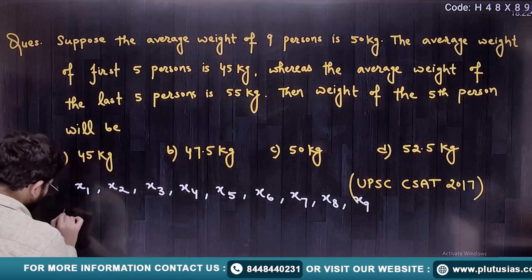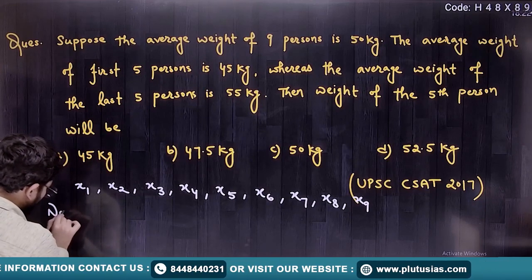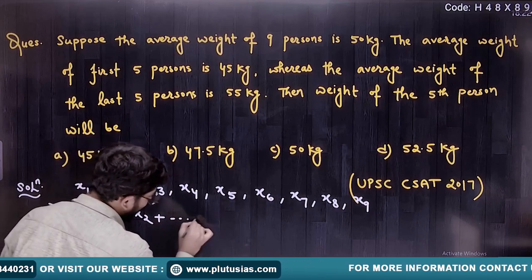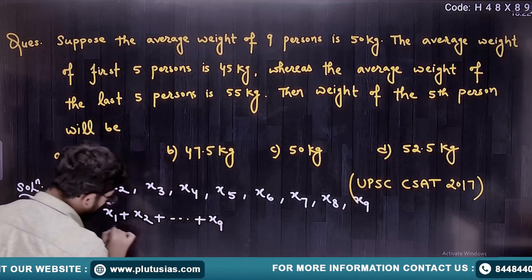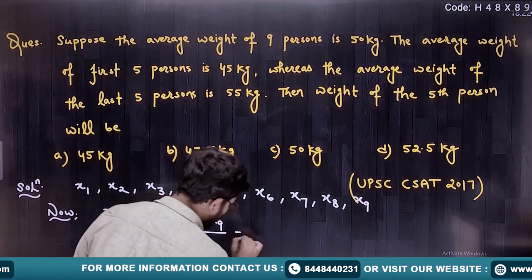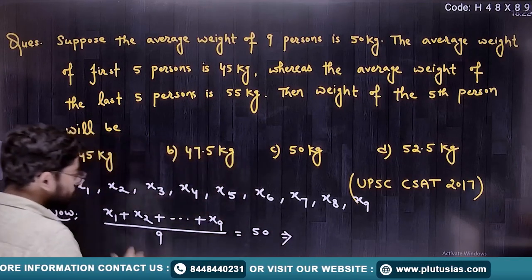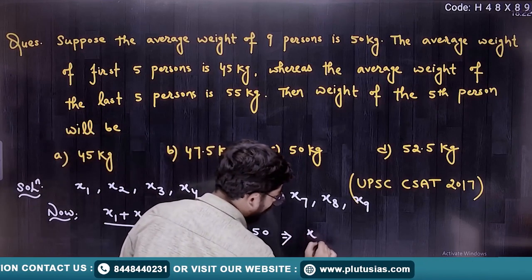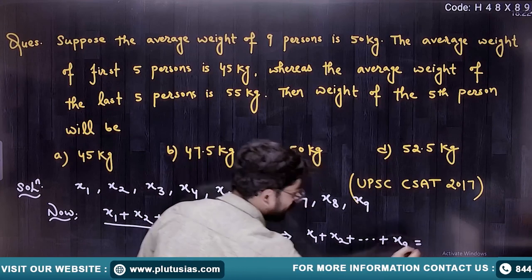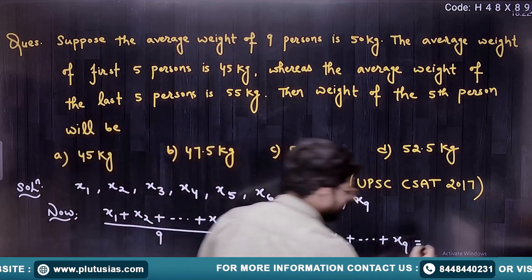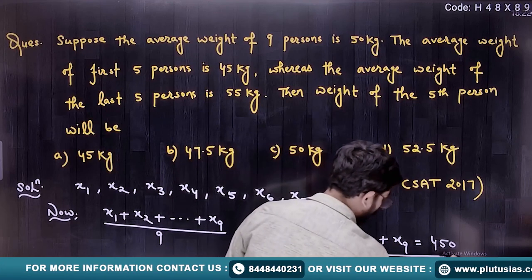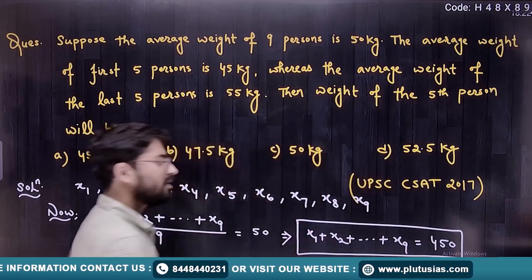When you add them, you can say X1 plus X2 plus till X9. Average is sum of all the observations divided by total number of observations, that is 9 here, and this equals 50. So sum of 9 persons, X1 plus X2 plus till X9, will be 9 into 50, that is 450. This is the sum of weight of 9 persons.